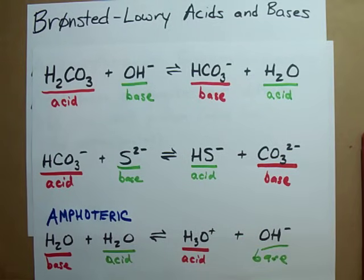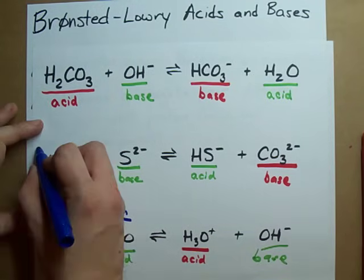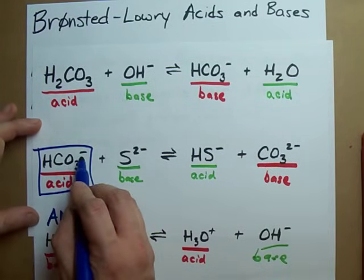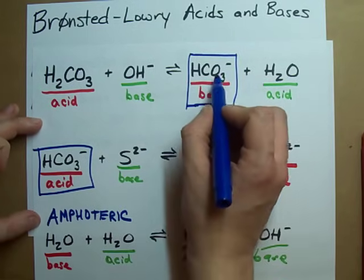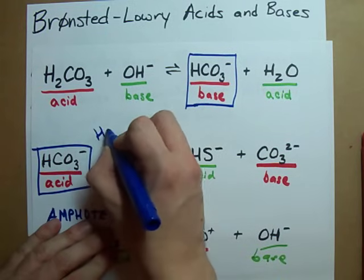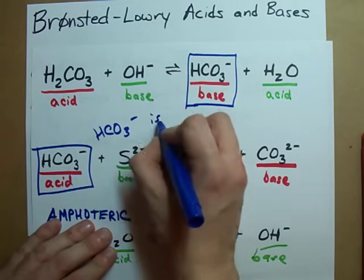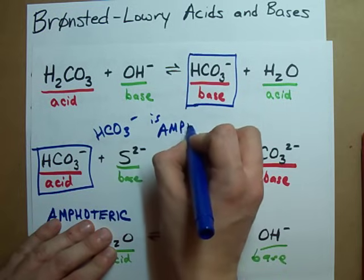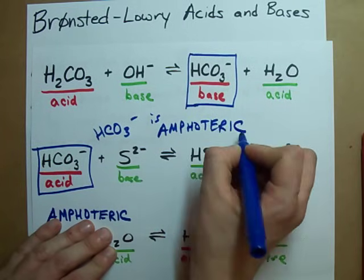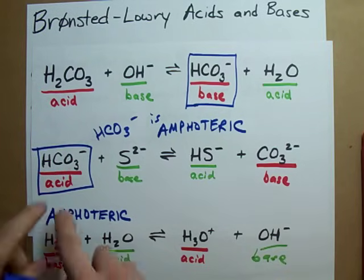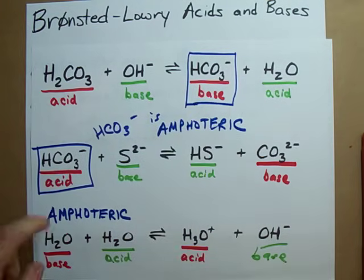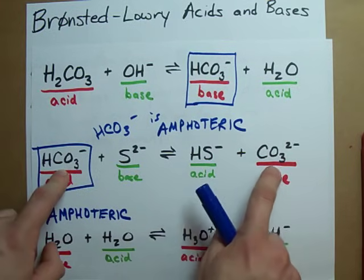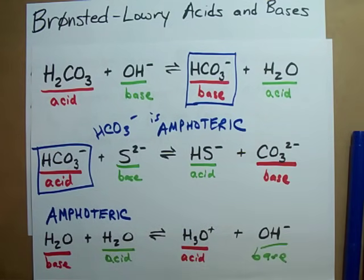There's one more amphoteric compound hanging out around here. Can you find it? HCO3- can be an acid, but HCO3- also acted as a base. HCO3- is an amphoteric compound because it can accept a proton to turn into this, or it can donate a proton to turn into this. HCO3-. How cool is that? Best of luck.